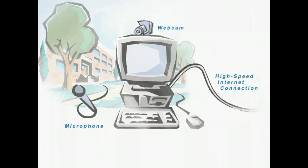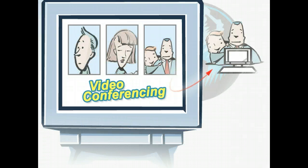An internet video conferencing system consists of a computer with a webcam, a microphone, a high-speed internet connection, and some type of video conferencing software. Additionally, the sites that you want to include in your video conference will need the same basic equipment.